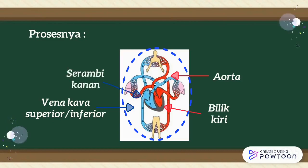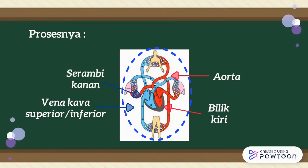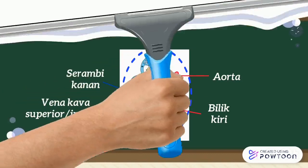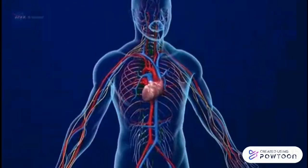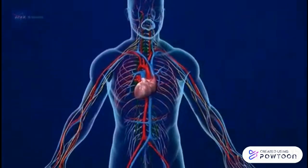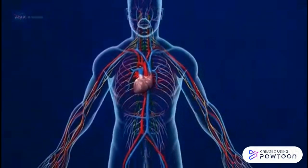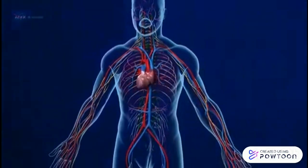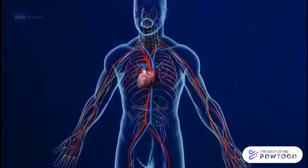Dari serambi kanan akan menuju ke bilik kanan dan mengikuti sistem peredaran darah kecil. Jadi seperti itu anak-anak, sehingga darah bisa beredar di dalam tubuh kita.